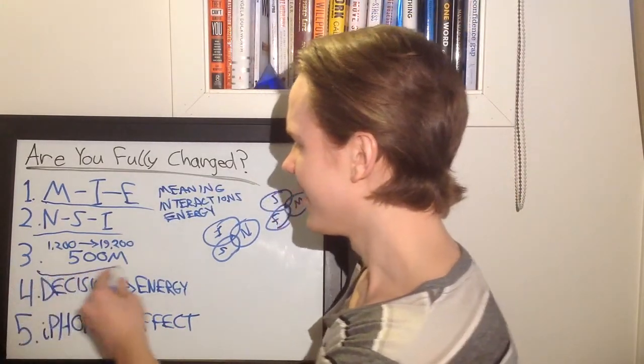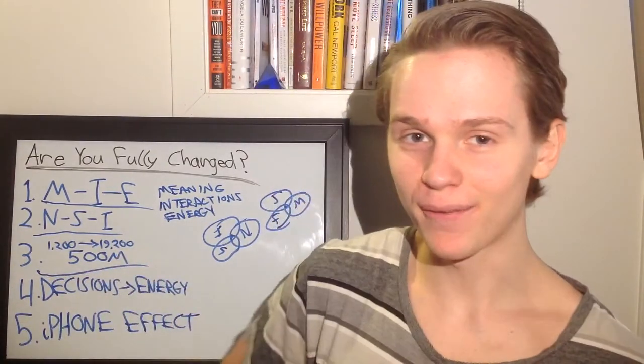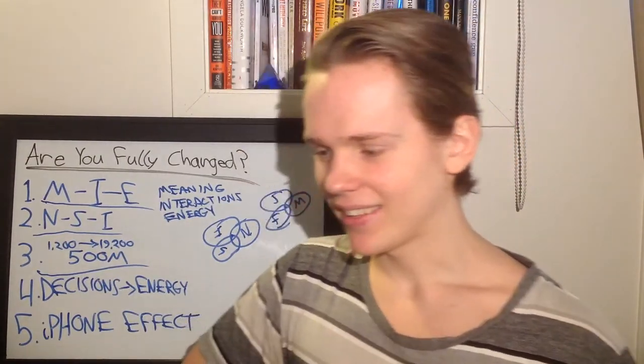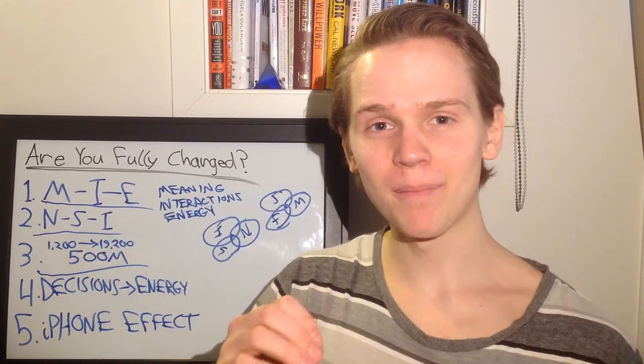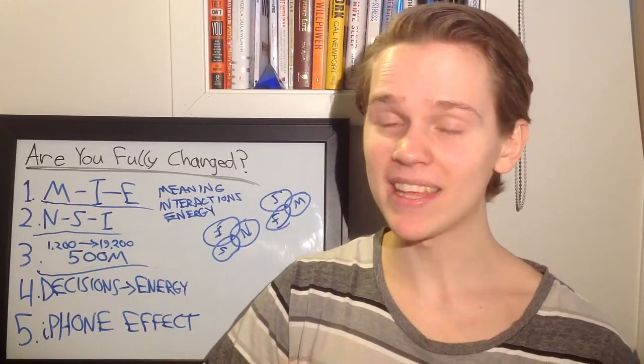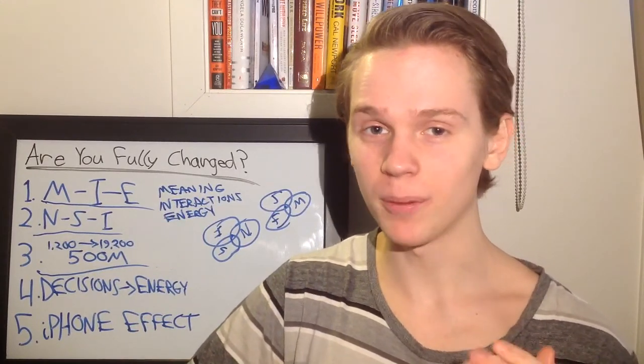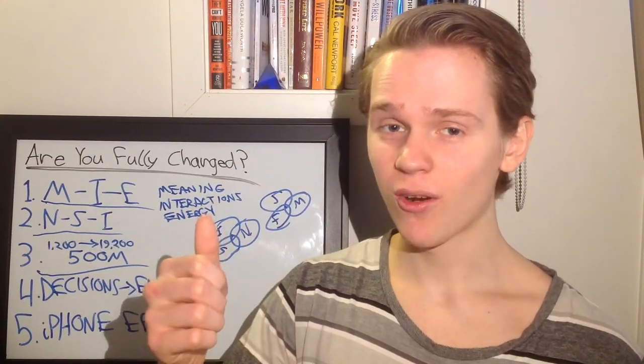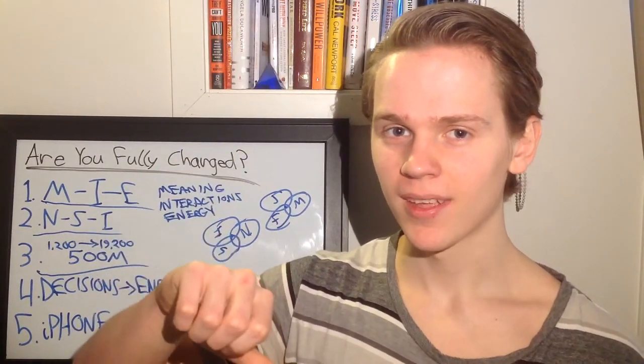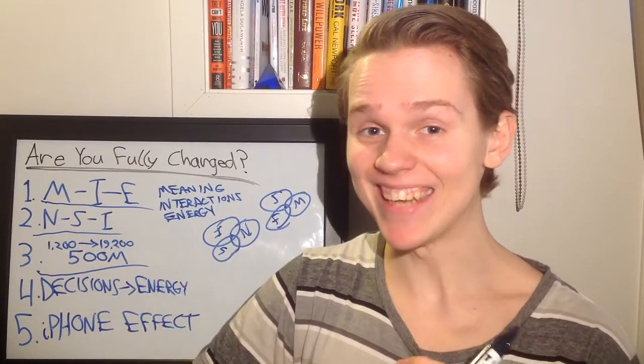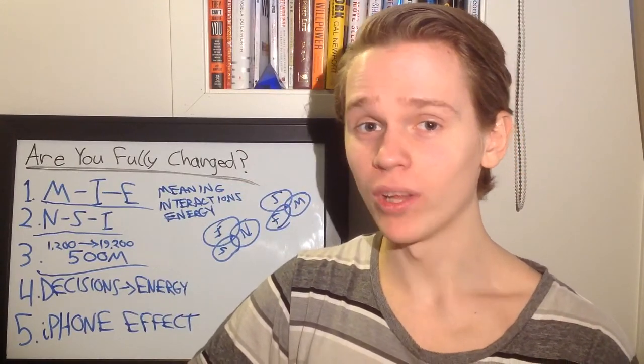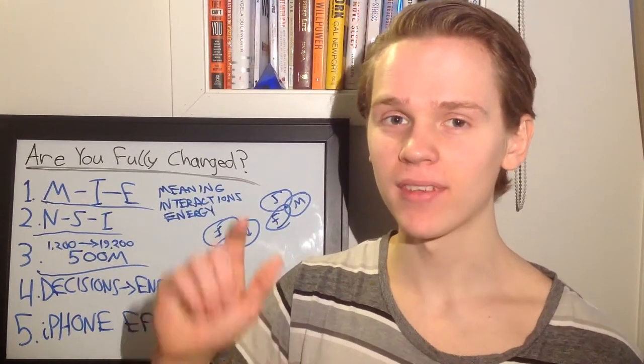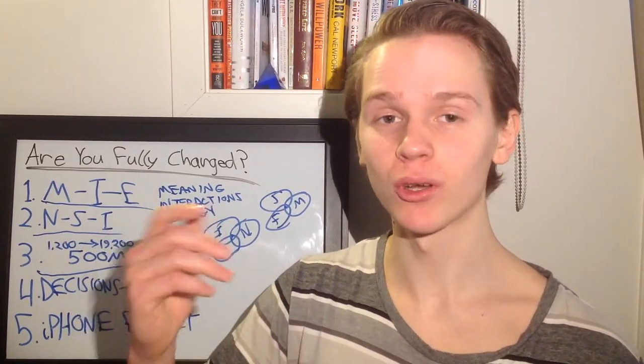1,200, 19,200, 500 million. Tom must find out that life consists of millions of individual interactions with other people. And they would either give us a positive charge or a negative charge. And these interactions and daily actions we take will impact and shape our weeks, months, years, decades, and our overall life.